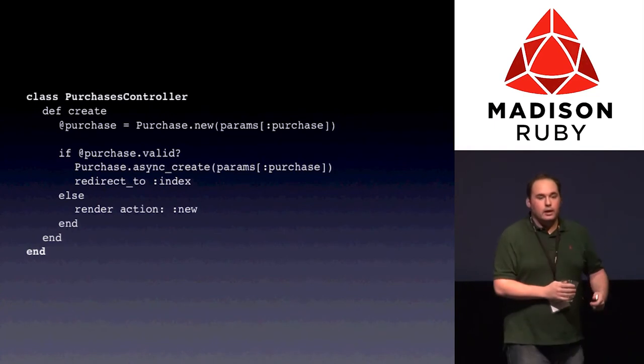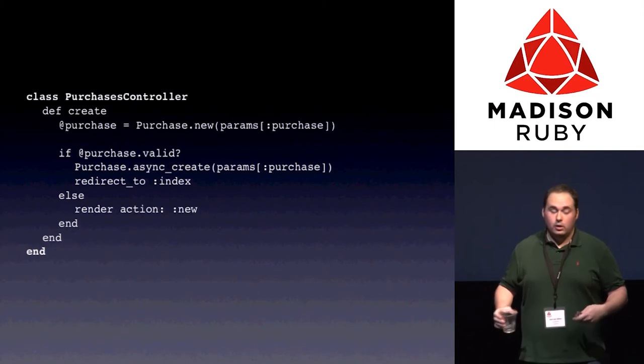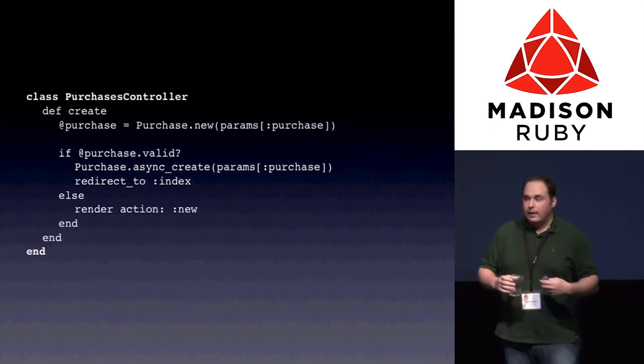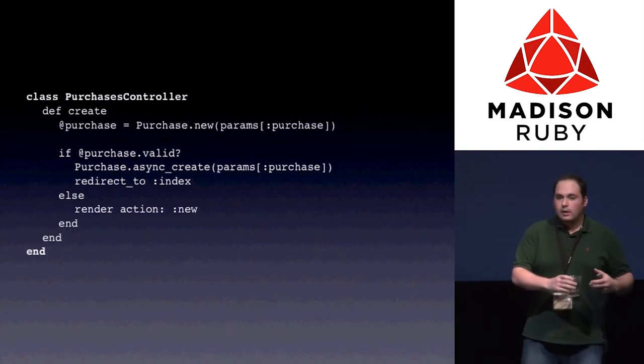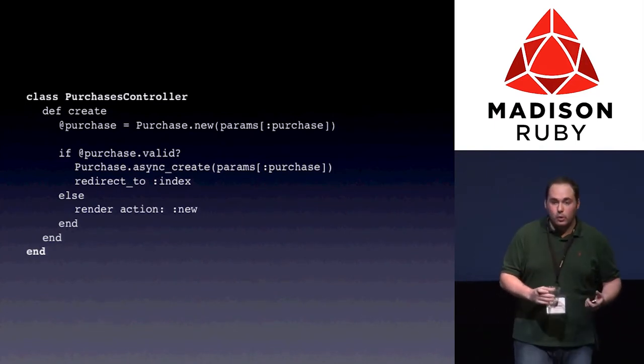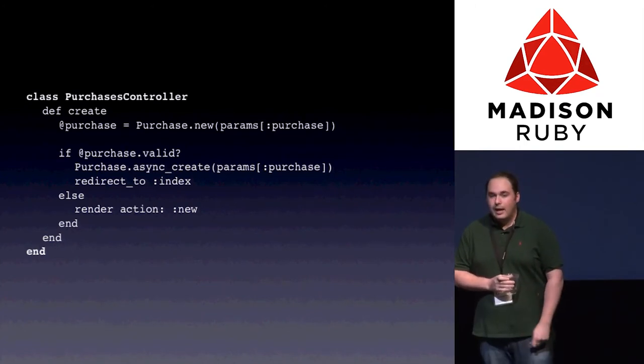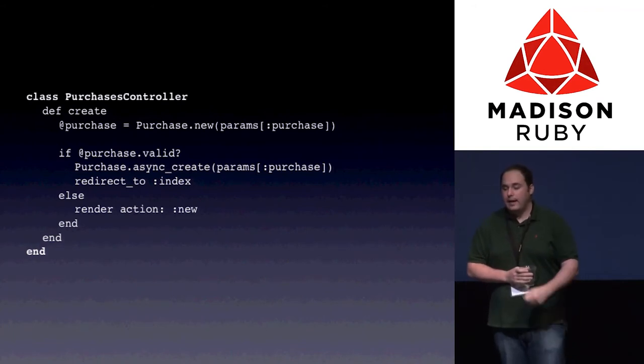So instead of doing this where everything is synchronous, what if we did this? What if we created our object in memory, made sure it was valid, never touching the disk. And if so, throw it off somewhere. Let the web server do what it's great at. And let something we designed more for this purpose do that. And we eliminate most of the disk I/O in doing this. And there's no database interaction at this point, allowing requests to happen very, very fast.